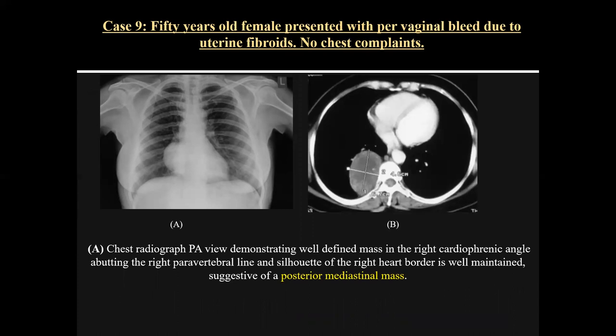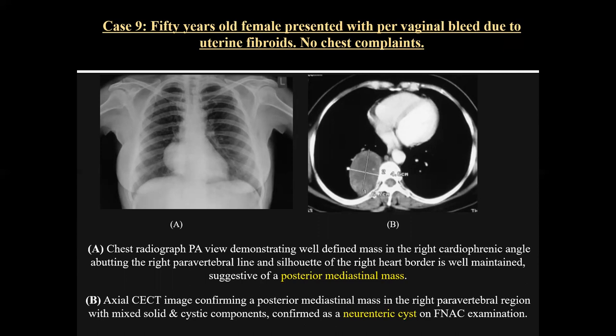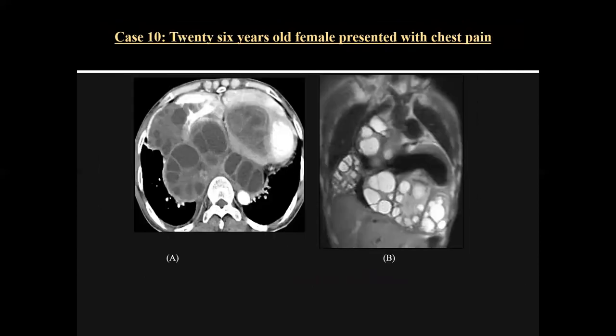Case nine was a 50-year-old female presenting with vaginal bleeding due to uterine fibroid, with no chest complaint. On chest X-ray PA view, there was a well-defined mass in the right cardiophrenic angle obliterating the right paravertebral line and abutting the right heart border, which remained well maintained. On axial contrast CT, there was a posterior mediastinal mass in the right paravertebral region with mixed solid and cystic components. This was confirmed as a neuroenteric cyst on FNAC examination.